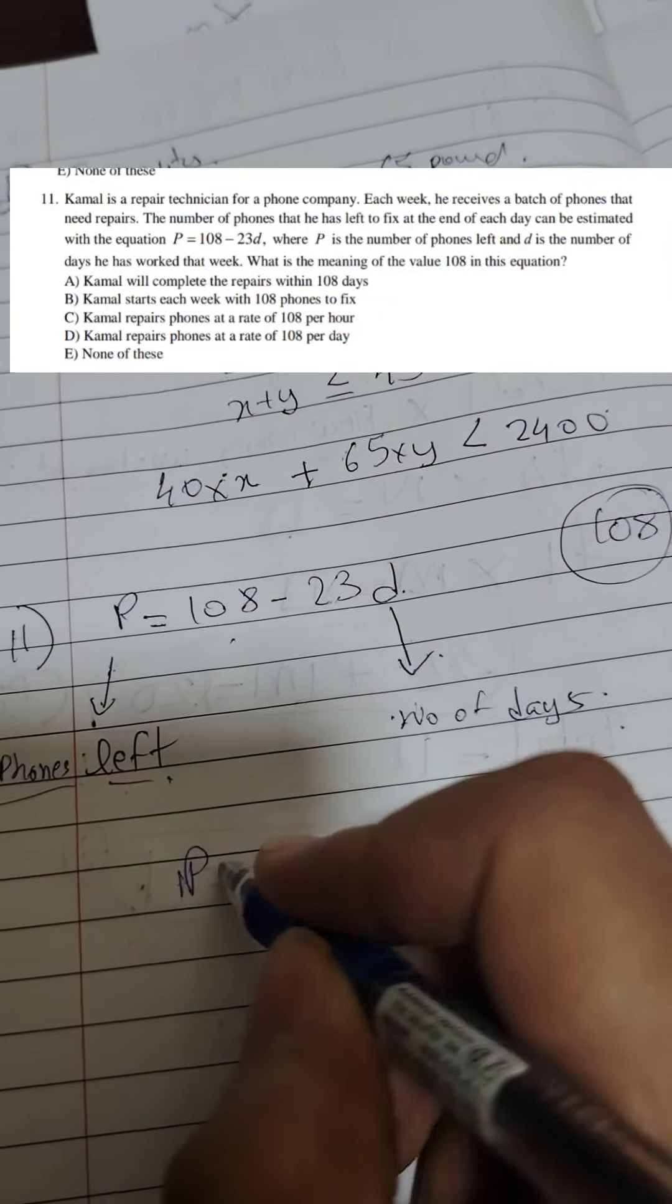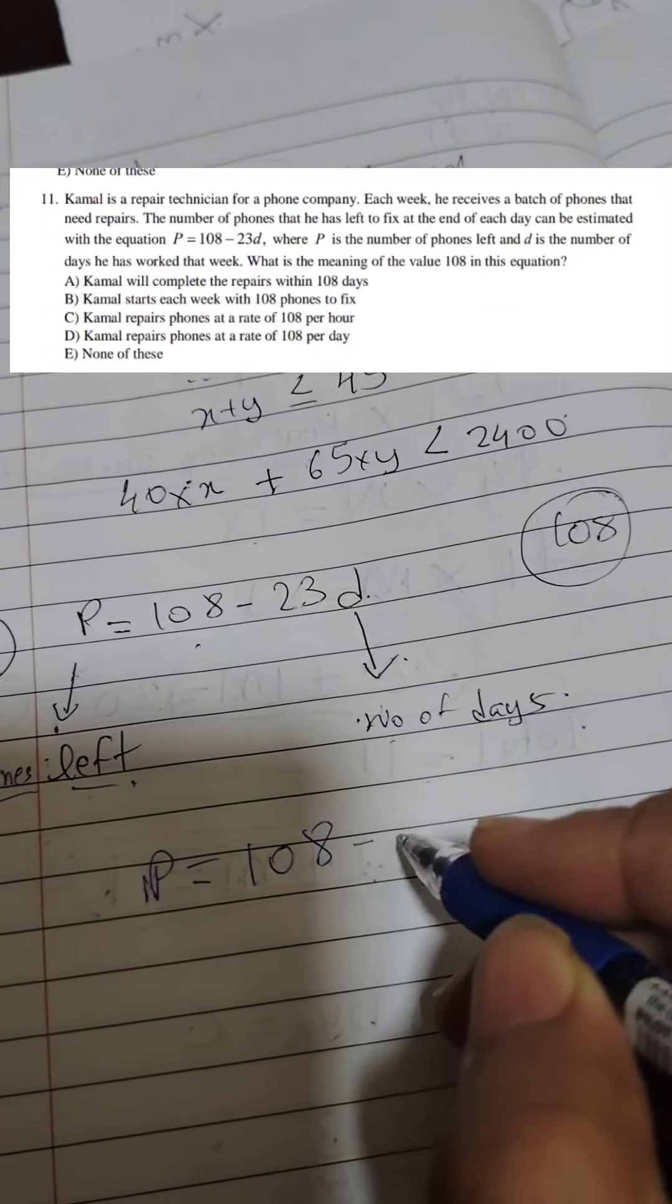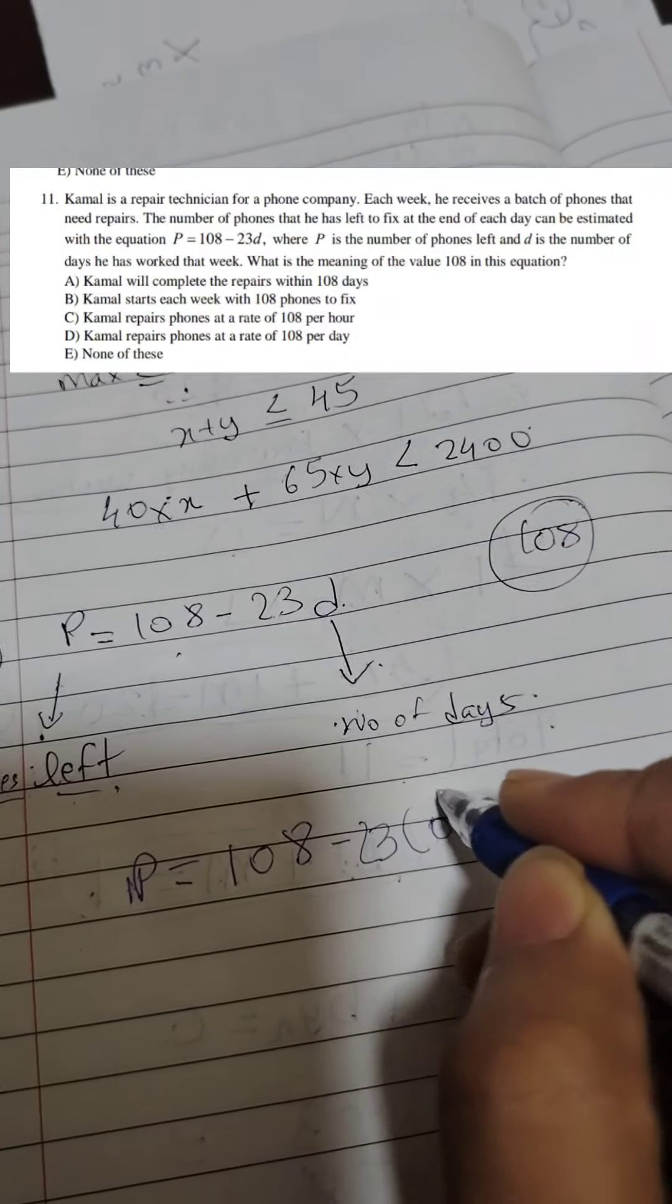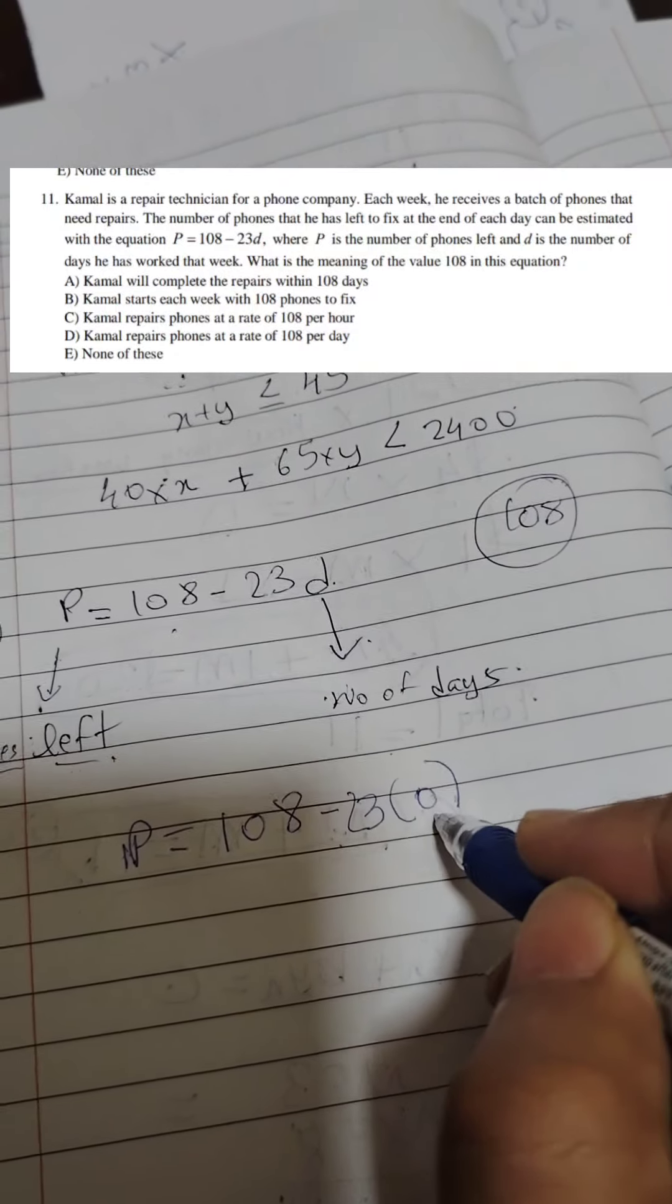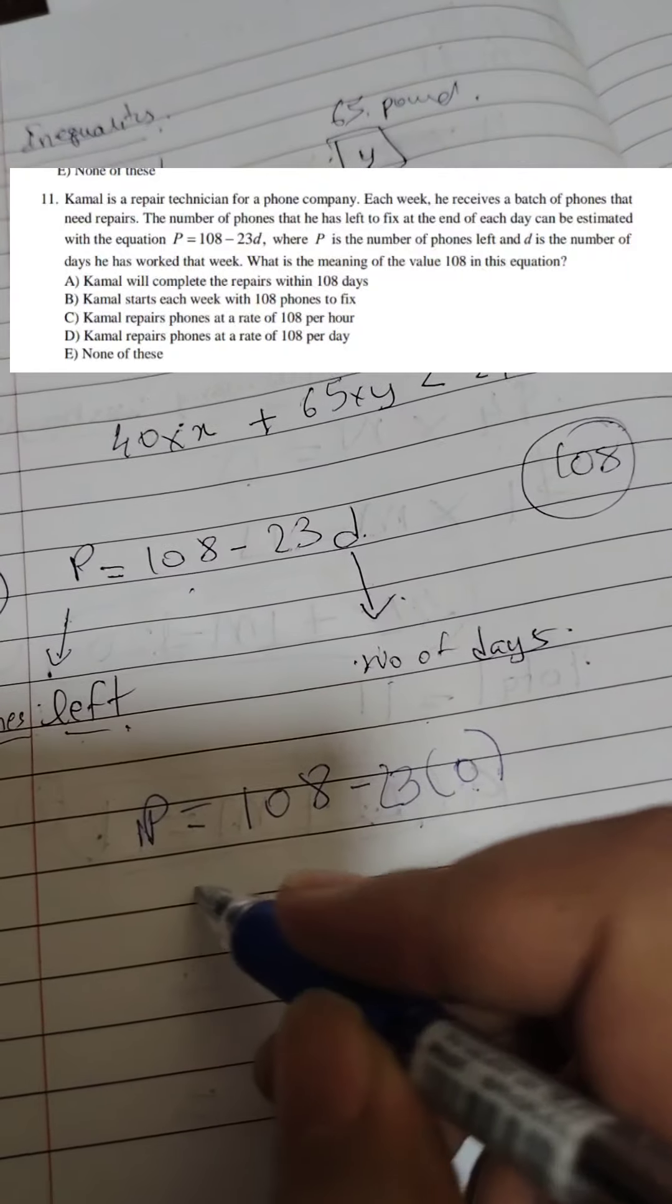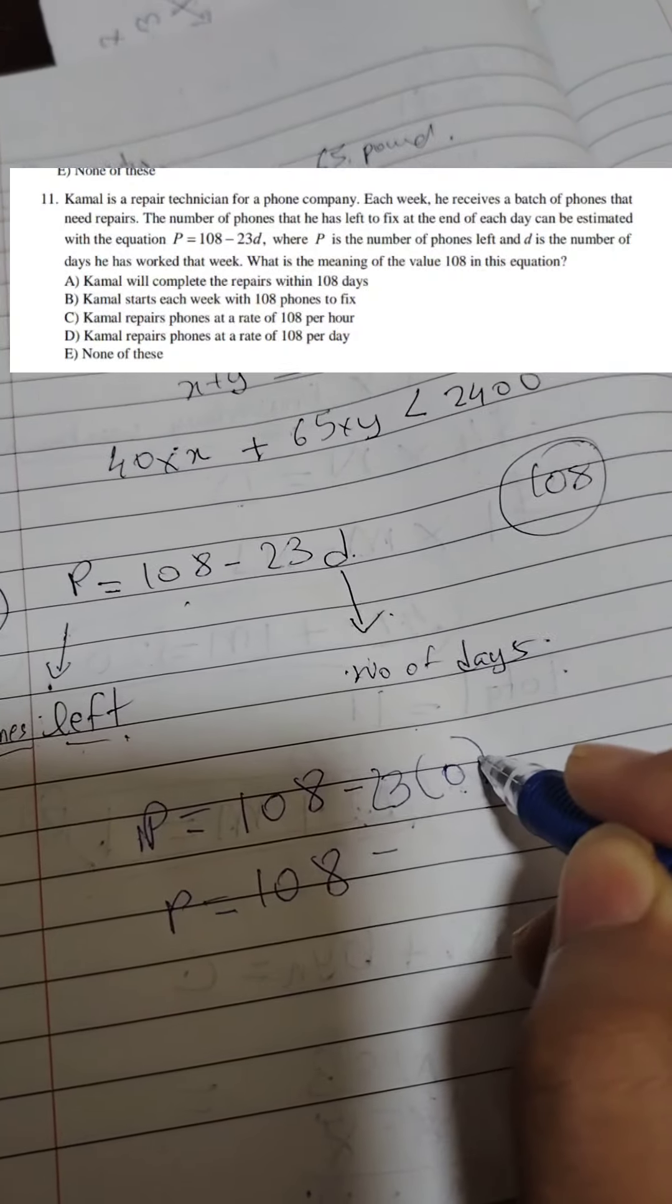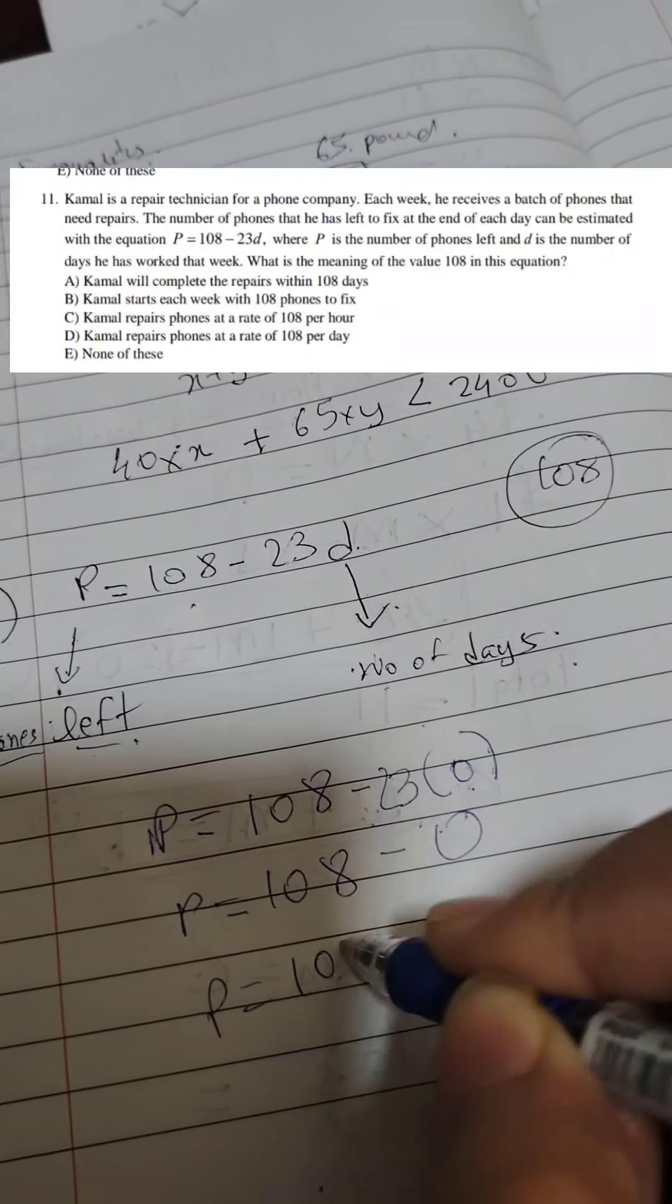We can say the number of phones left is 108 minus... suppose he didn't work at all this week, then D equals 0 because D is the number of days he works. If he didn't work, suppose he's getting married, then 0. So P equals 108 minus 23 into 0 is 0. So P equals 108.